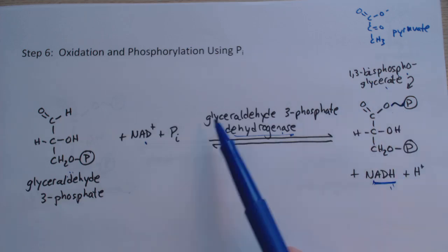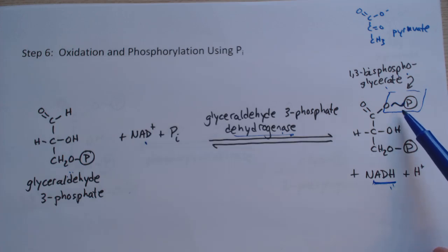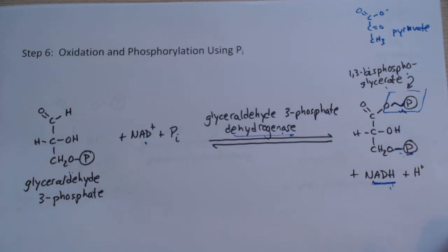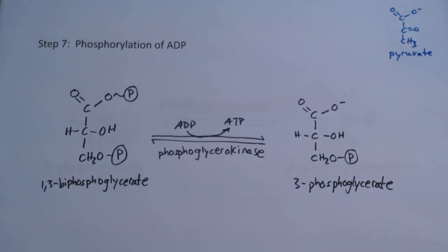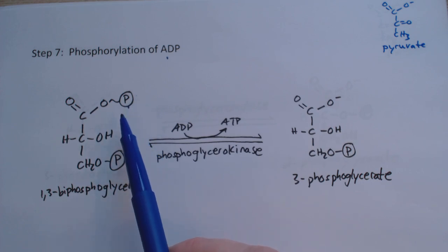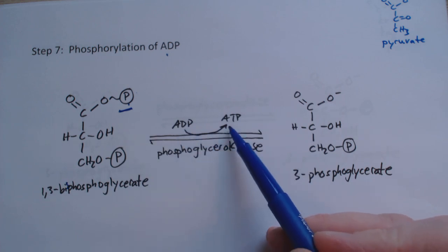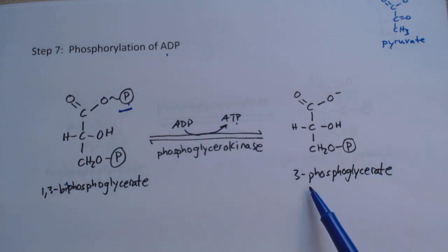The important thing here is we have this wavy line for the phosphate - that's a high-energy bond. This phosphate is bonded to the system at lower energy, but this high-energy bond is going to react much more likely down the line. Step 7 is phosphorylation of ADP. We have this high-energy phosphate bond, and the 1,3-bisphosphoglycerate will give up its phosphate group to the ADP to create ATP through phosphoglycerokinase, creating 3-phosphoglycerate. We're getting very close to the structure of pyruvate.